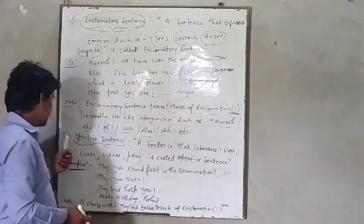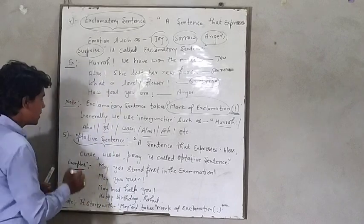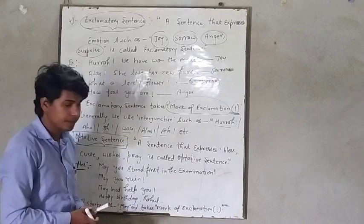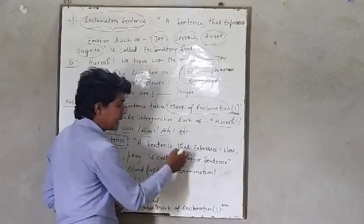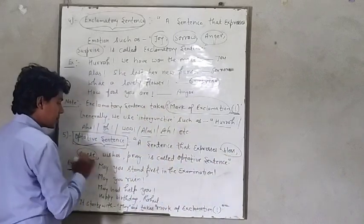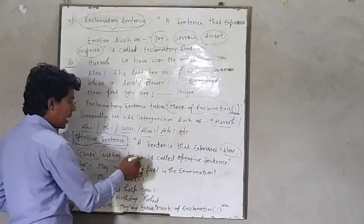Now see the next type of sentence. That is, optative sentence. What is optative sentence? A sentence that expresses bliss, curse, wishes and pray.